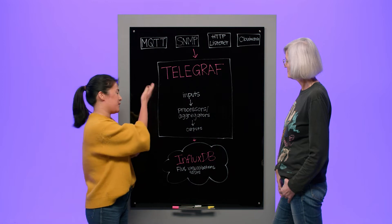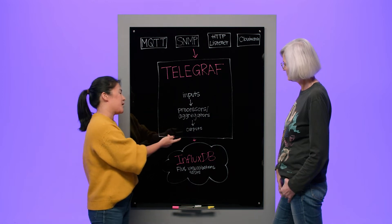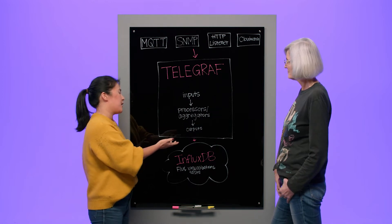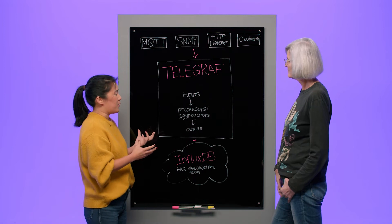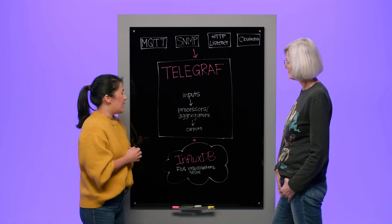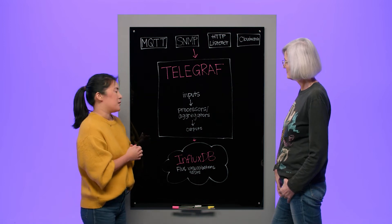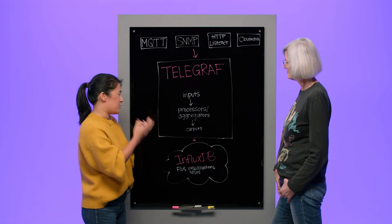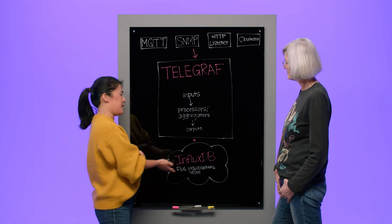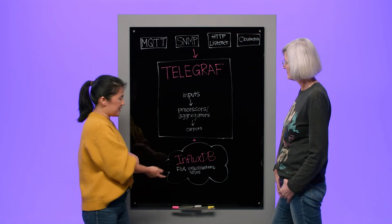Once that data is read in, it utilizes its processors and aggregators to transform your data however you want. You can use them to decorate your data, you can use them to drop metrics if you want, and once you get that data to what you want it to look like, you can use the output plugins to write to your data source — in this case, into InfluxDB Cloud.